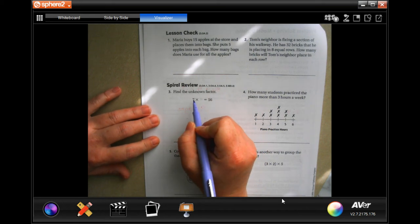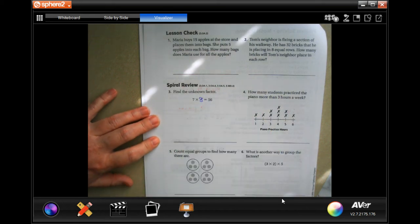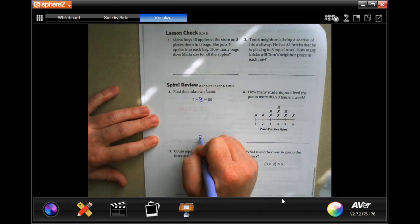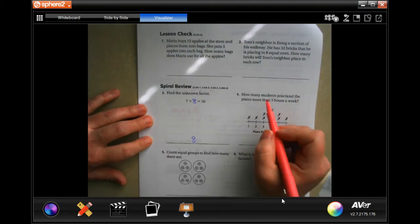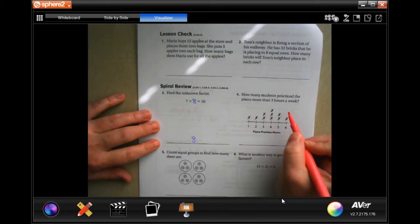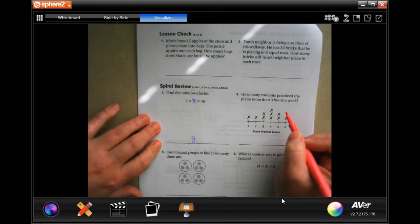Find the unknown factor. We know that 7 times 8 is 56, so eight. How many students practice the piano more than three hours?